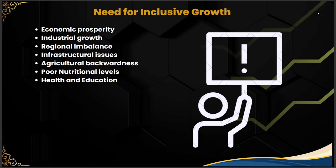The need for inclusive growth begins with economic prosperity — for rapid and sustainable poverty reduction, inclusive growth is very necessary as it contributes to the benefits of economic prosperity. Industrial growth is also necessary since India does not have a strong industrial base. Infrastructural issues like inadequate infrastructure hinder the progress of the economy and risk the middle-income trap.